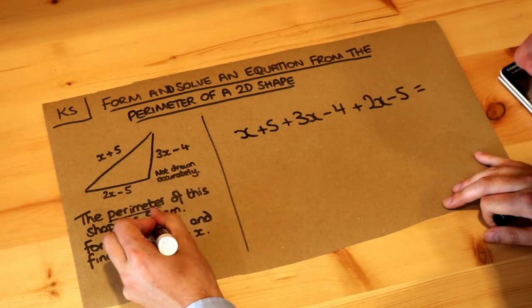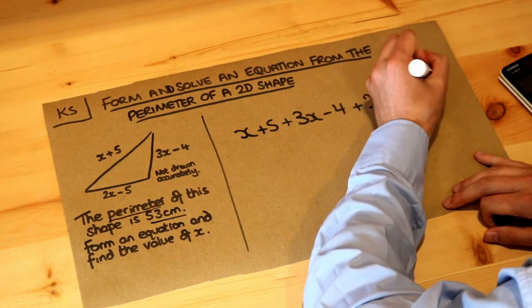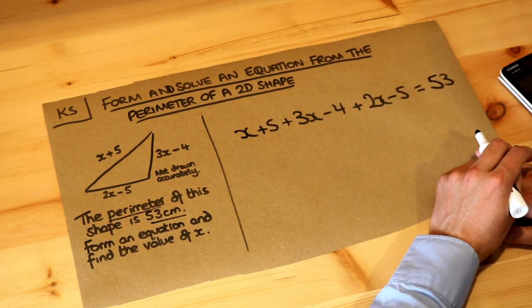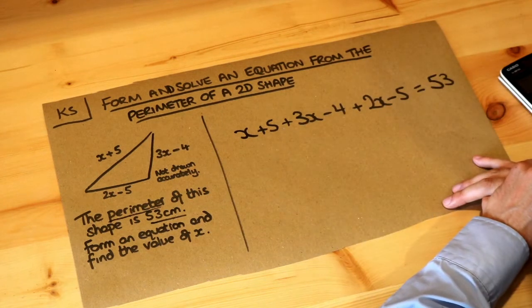But we're told that the perimeter of the shape is 53, so we can set that equal to 53, and now we've just got an equation that we can solve.